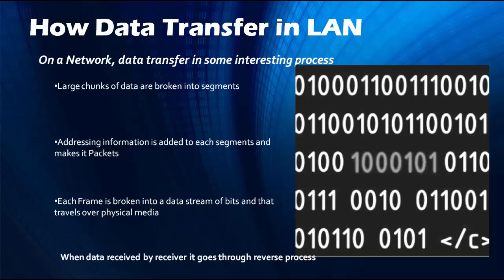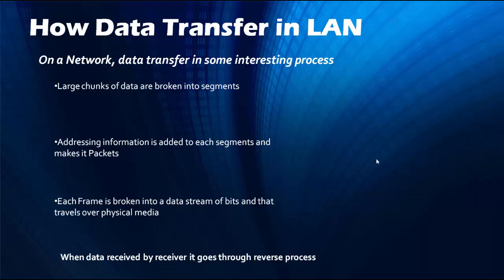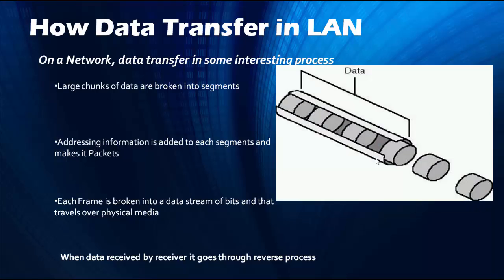When the data is received by the receiver, it goes through the reverse process. The receiving computer takes all the bits and reassembles them into a frame. Then it strips out the logical and physical addressing information, so it is no longer a packet. It comes back to the segments and reassembles the data in its previous form, as it was sent by the sender.